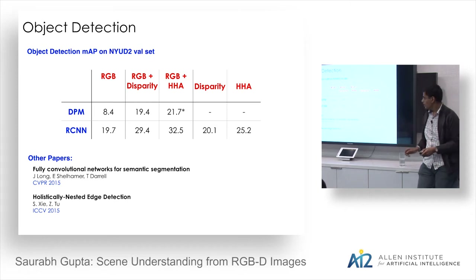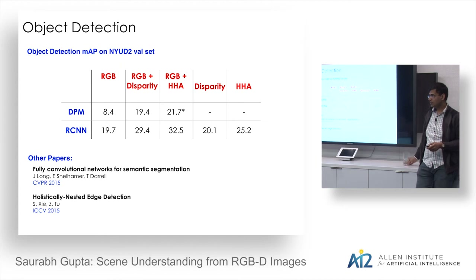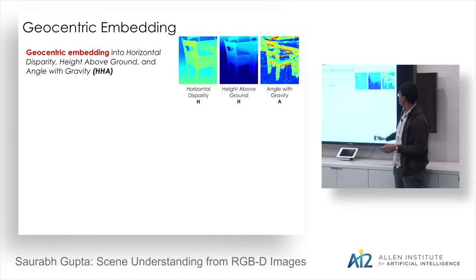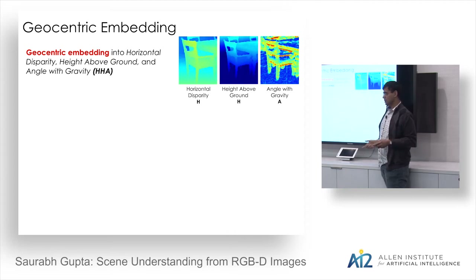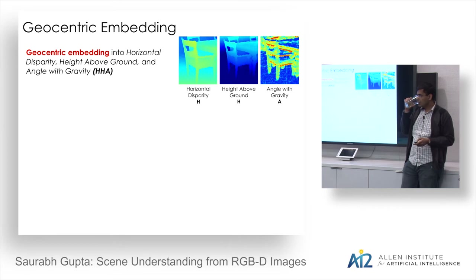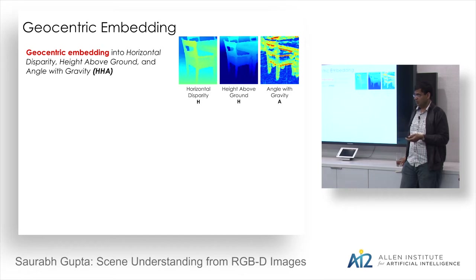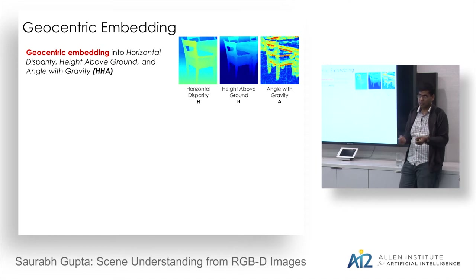Further discussion: this global context baked into local crops is interesting from a neuroscience perspective — V1 receives feedback from higher areas. One could try learning this global-to-local mapping end-to-end rather than hard-coding it. Q: What if a chair is knocked over? A: Any machine learning algorithm will be less reliable on out-of-distribution poses not seen during training — this is a fundamental limitation of all dominant detection paradigms.